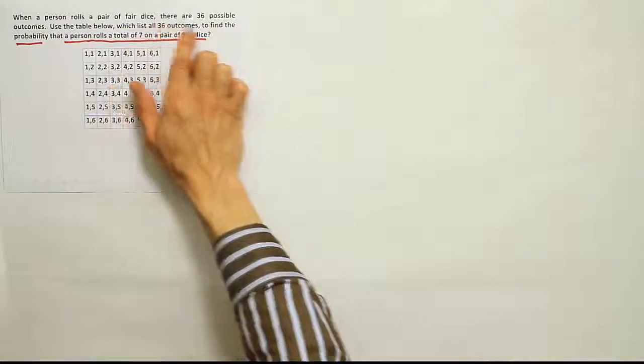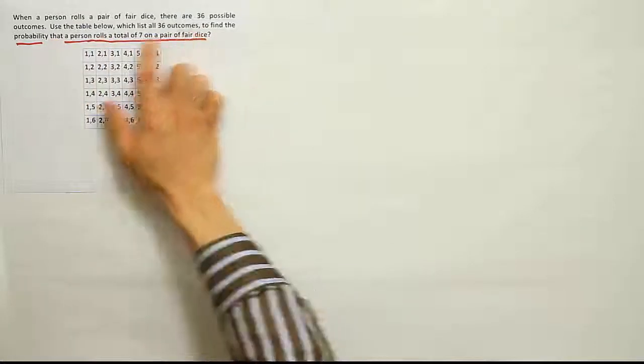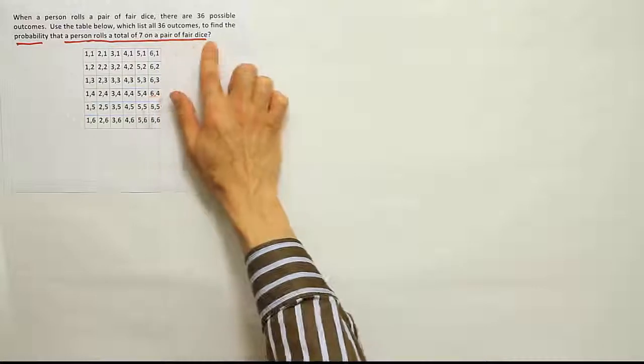When a person rolls a pair of fair dice, there are 36 possible outcomes. Use the table below, which lists all 36 outcomes, to find the probability that a person rolls a total of 7 on a pair of fair dice.